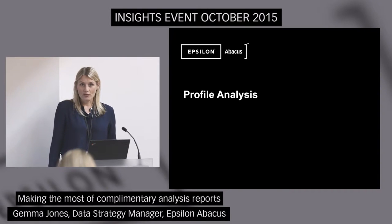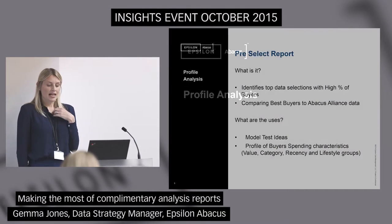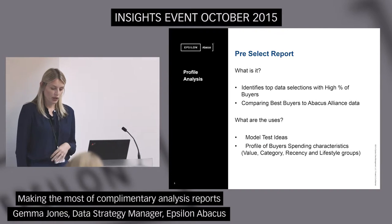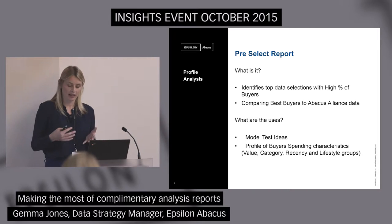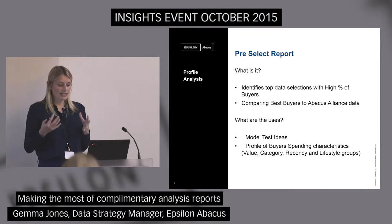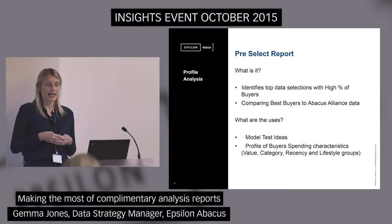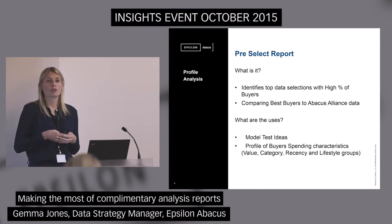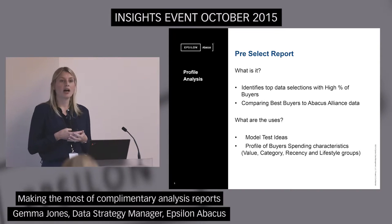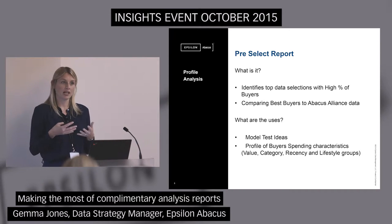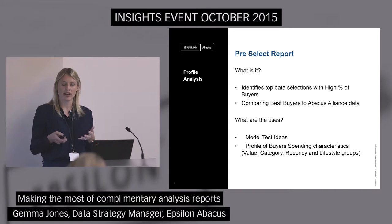Starting with profile analysis. The pre-select report is a quick report that we can run for you. It compares your house file with the Abacus Alliance database and finds the top data selections that have a high proportion of buyers. Internally, we use this report to give us ideas for model lists, but it will give you a good profile of your customers based on things like value, category, and recency.